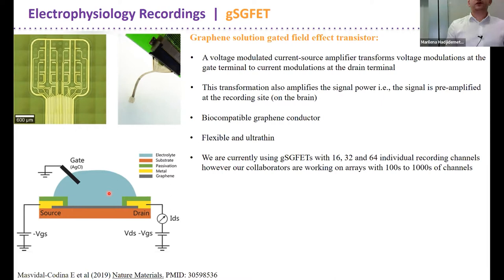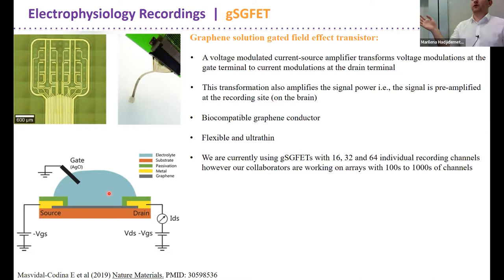The conductor we're using is graphene. In normal field effect transistors it's a metal oxide; here it's graphene, which is biocompatible, flexible, and ultra-thin. These arrays can have 16, 32, or 64 operating channels, which is what we're using. Our collaborators in Barcelona who fabricated and designed these devices are working on arrays with hundreds of thousands of channels, which will really improve our spatial mapping.